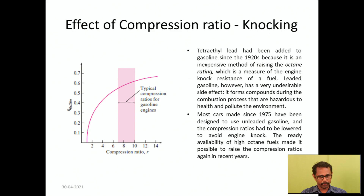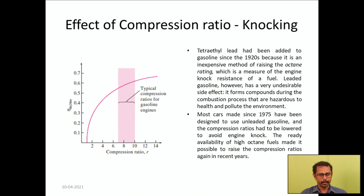Tetraethyl lead has been added to gasoline since the 1920s as an inexpensive method of raising the octane rating, which reduces knocking. However, leaded gasoline has a very undesirable side effect: it forms hazardous compounds that pollute the environment. Therefore, most cars made since 1975 have been designed to use unleaded gasoline, requiring the compression ratio to be lowered to avoid engine knock. The readily available high-octane fuels have made it possible to raise compression ratios again in recent years.